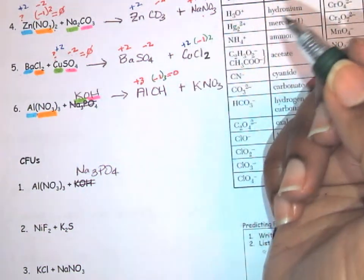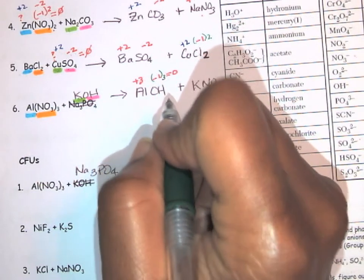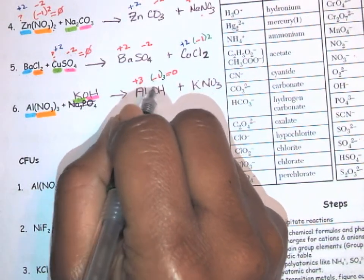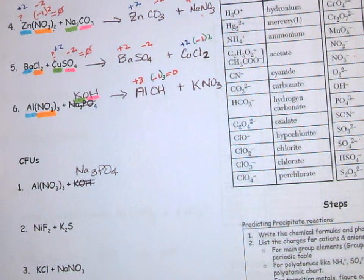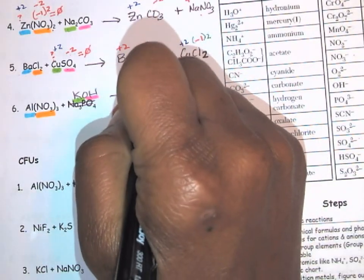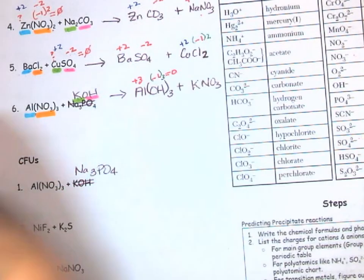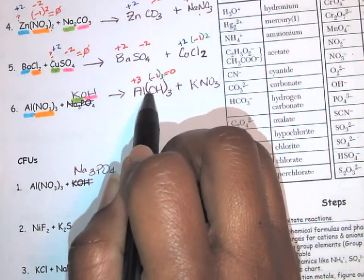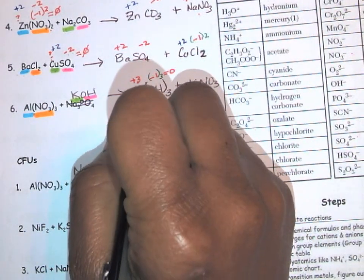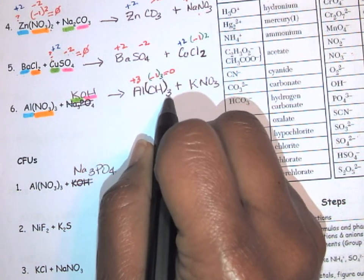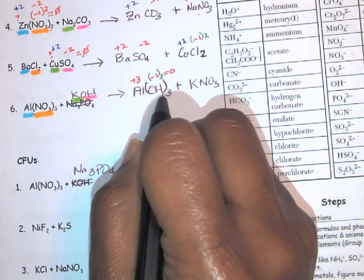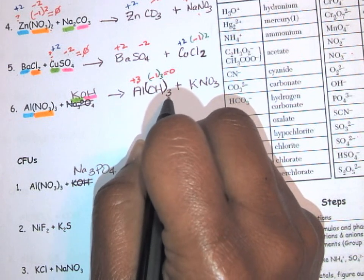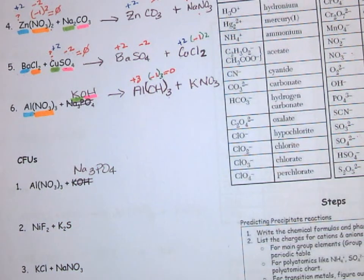So we've got a plus three charge and a minus one charge. To get the overall charge to be zero, I need three hydroxides. Now notice that because it's a polyatomic, if you have more than one, make sure you put parentheses around it and then the subscript outside that parentheses. So since I have three hydroxides, I put it in parentheses and a three on the outside. All right, so now this formula is correct.